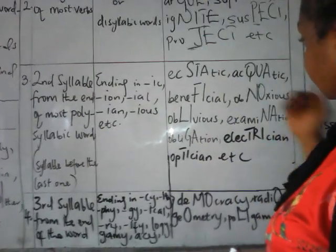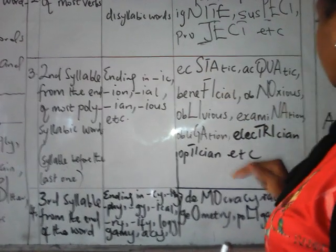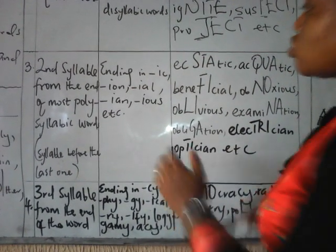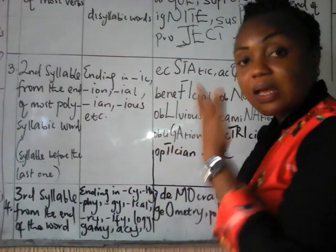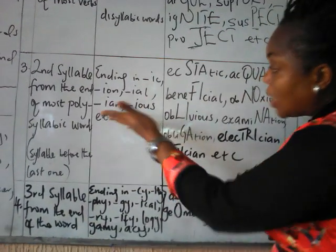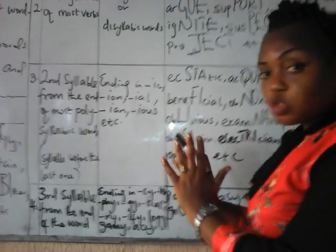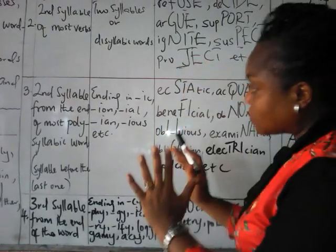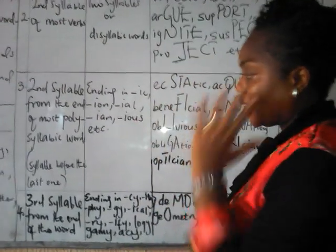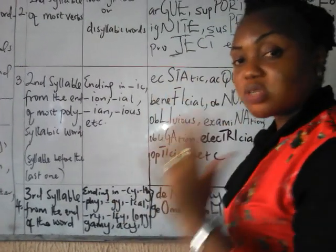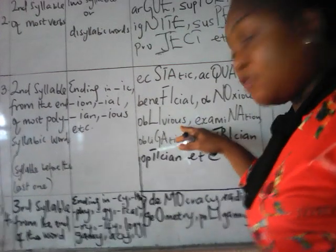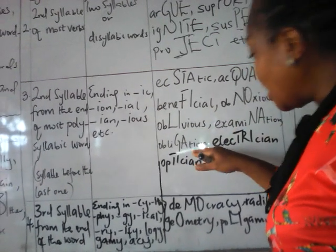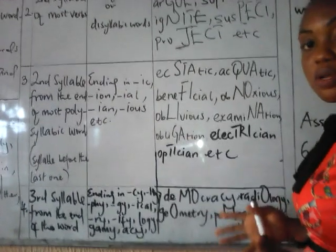We count from behind: one, two — and stress falls on that second syllable from behind. This applies to polysyllabic words ending in -IC, -ION, -IAL, -IOUS, -IAN, and so on. Most of them have one or two exceptions, but mostly you stress the second syllable from behind. Examples include: aesthetic, aquatic, beneficial, obnoxious, oblivious, examination, obligation, electrician, optician, and so on.